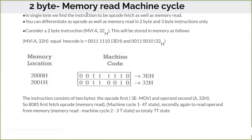Now we will go to the 2-byte memory read machine cycle. In a 2-byte instruction, 2 memory locations are used — the opcode is in the first location and in the next memory location the operand is placed. Let us consider the instruction MVI A, 32 hex. That means after execution, 32 is placed in the accumulator. The equivalent hex opcode for MVI A is 3E, then 32 is placed. So memory location 2000 holds 3E and location 2001 holds 32.